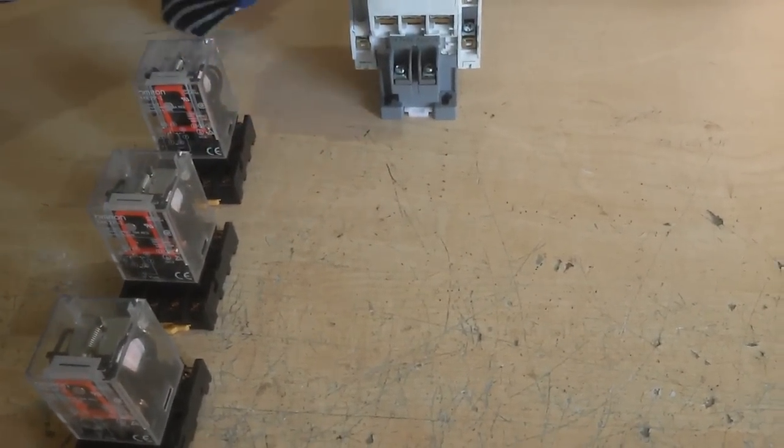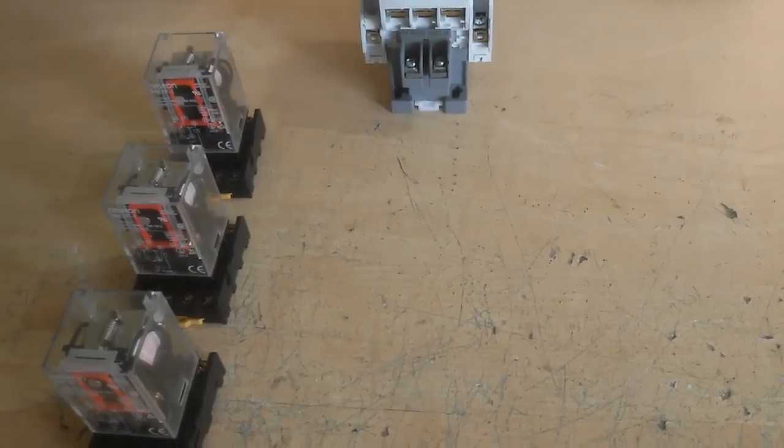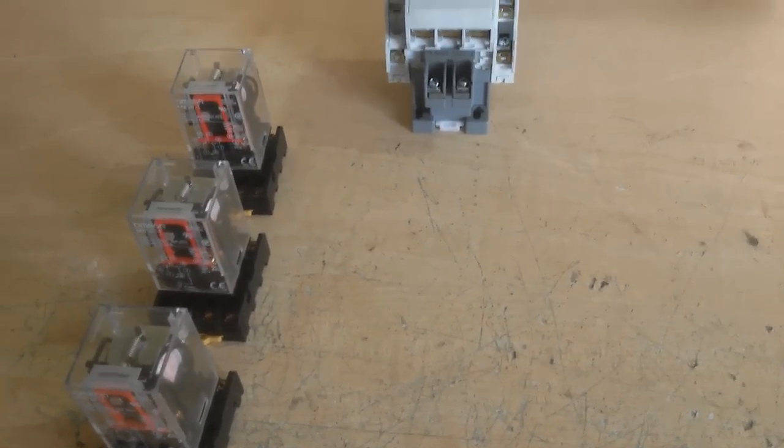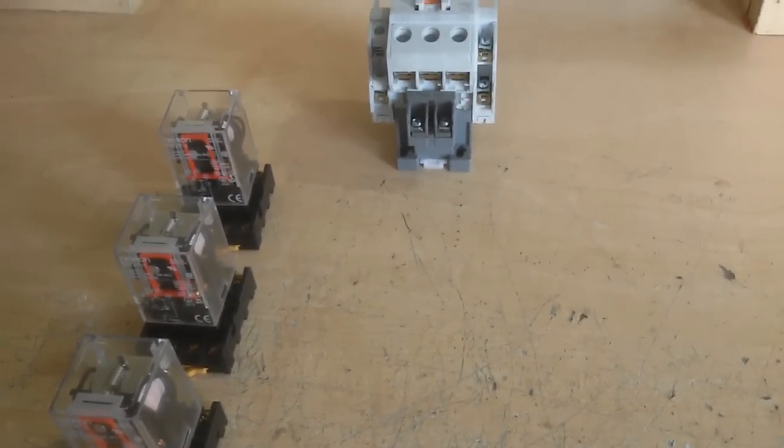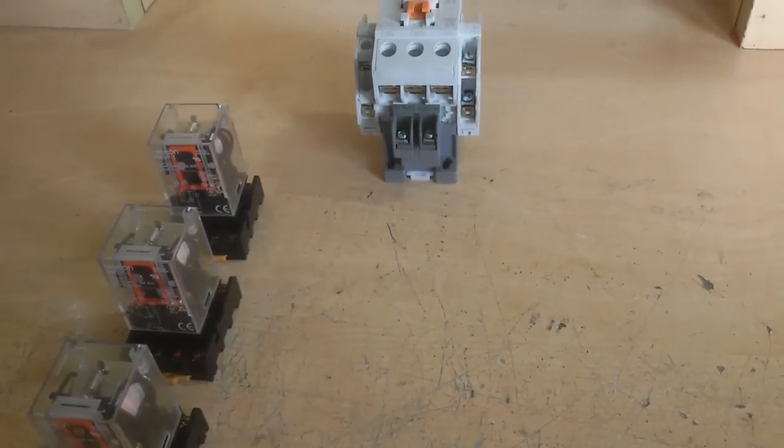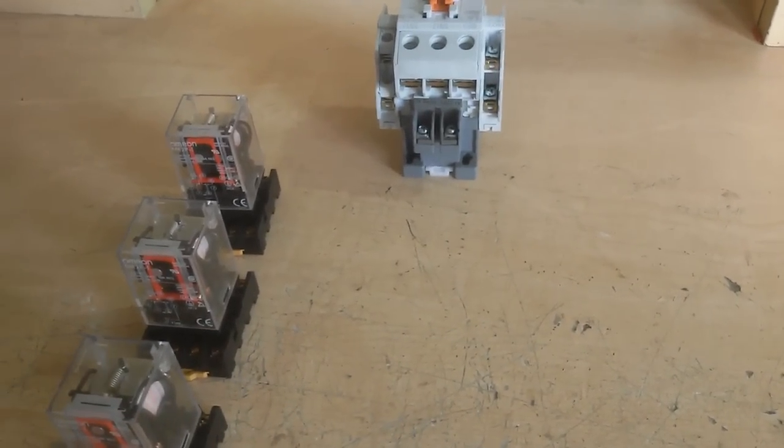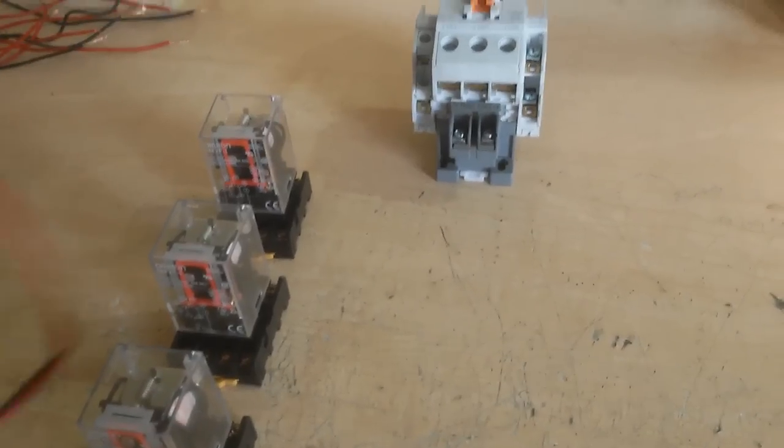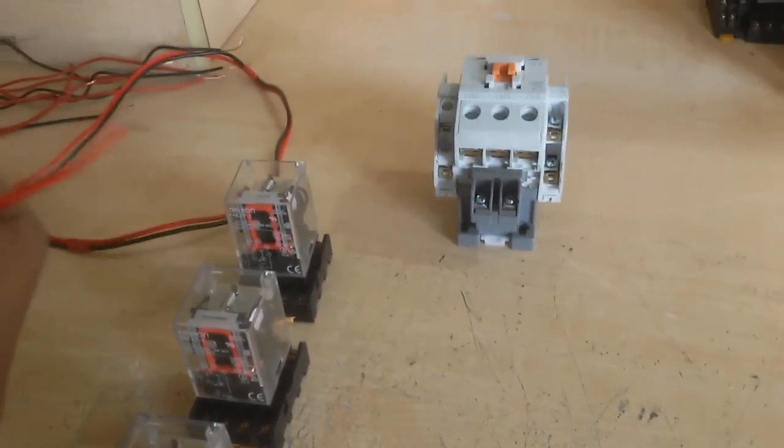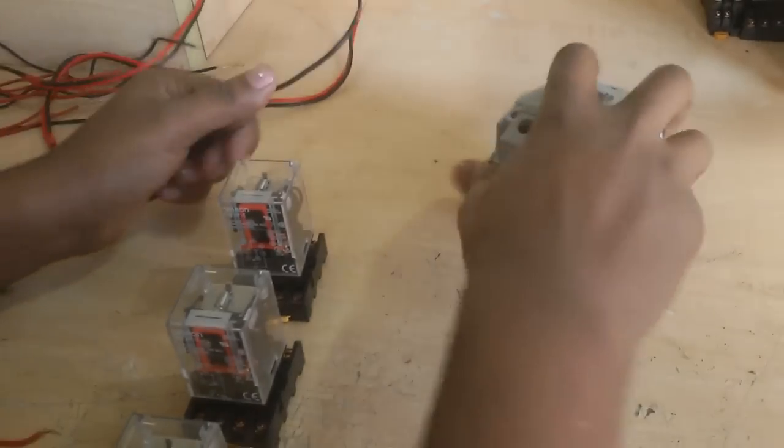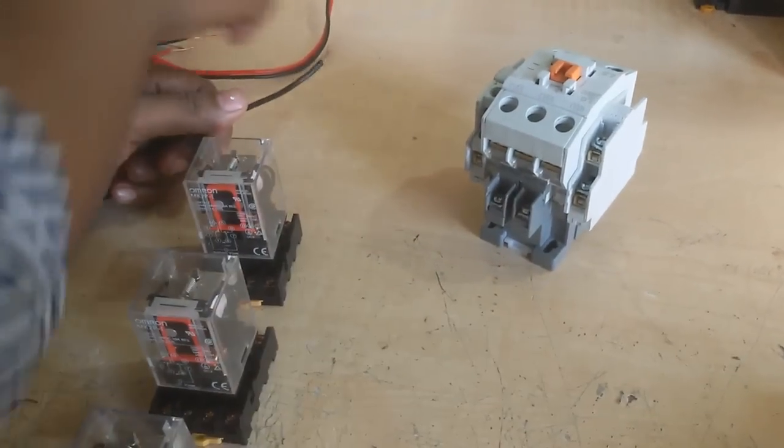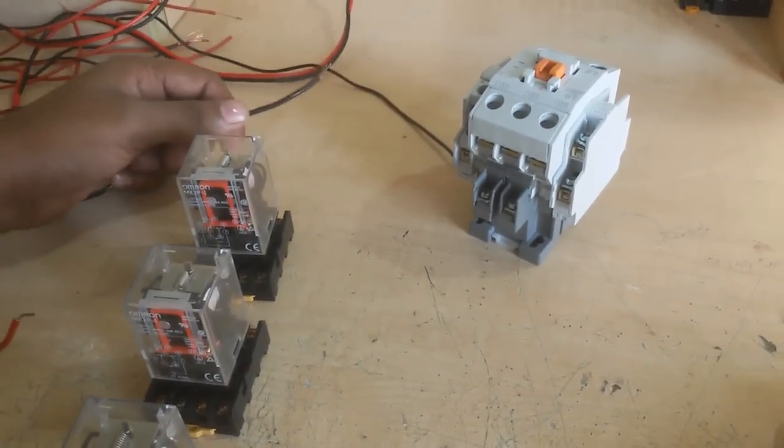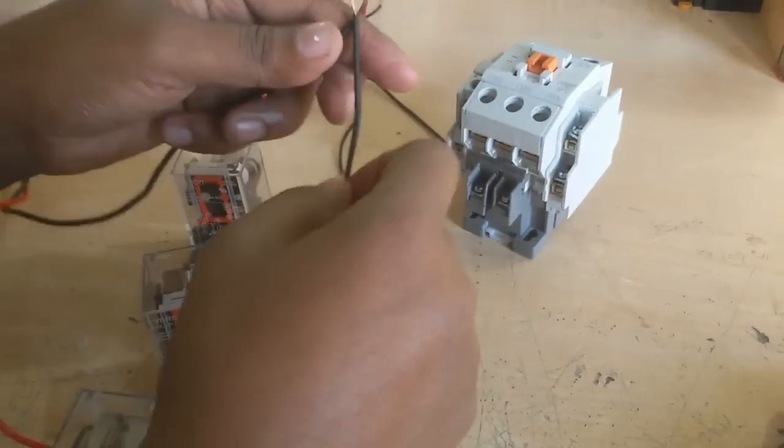I also discuss in my other video this diagram. First I take a supply line, one phase and other is neutral. I connect this neutral with magnetic contactor.